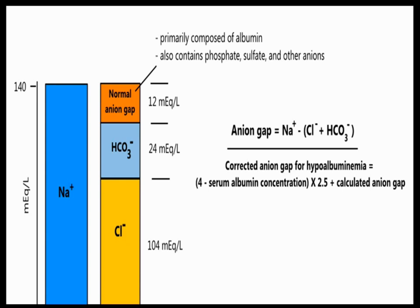The reasons for this anion gap are certain unmeasured anions like phosphates, sulfates, lactic acid, and ketone bodies. Normally it is because of phosphates, sulfates, and albumin, which plays a very important role in formation of the anion gap. To calculate anion gap without considering potassium, you take sodium minus (chloride plus bicarbonate), which gives a normal anion gap of around 12.